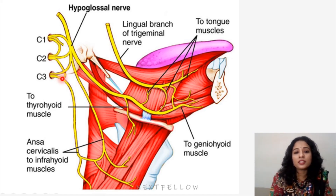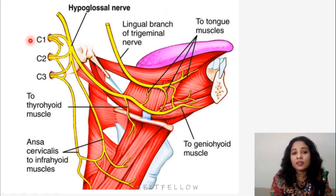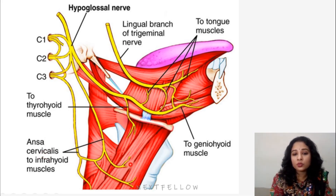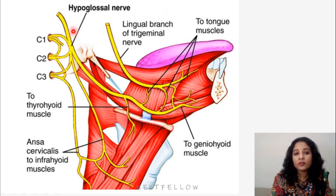Regarding the nerve supply from ansa cervicalis: the hypoglossal nerve continues and gives branches to the thyrohyoid muscle and the geniohyoid. These two muscles are not supplied by ansa cervicalis — they are supplied by C1 fibers via the hypoglossal nerve. The ansa loop supplies the superior belly of omohyoid, sternohyoid, and sternothyroid. We can also see in the image the lingual nerve, which is the sensory nerve supplying the anterior two-thirds of the tongue, and the hypoglossal nerve as a motor nerve supplying most muscles of the tongue.